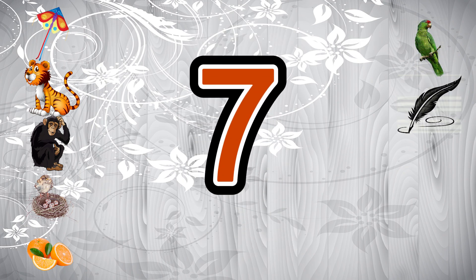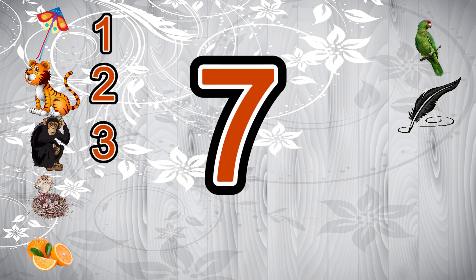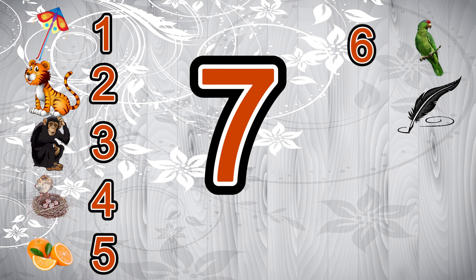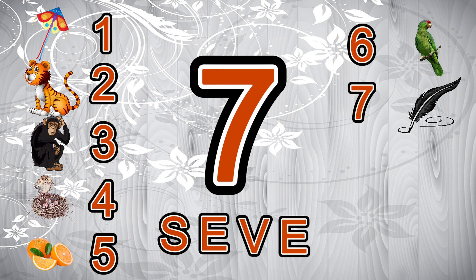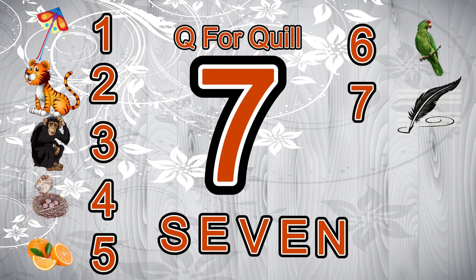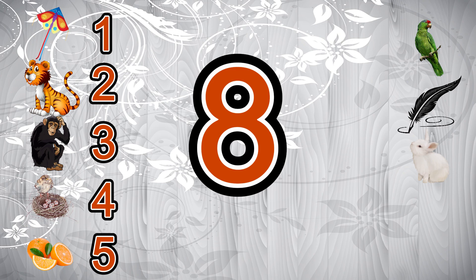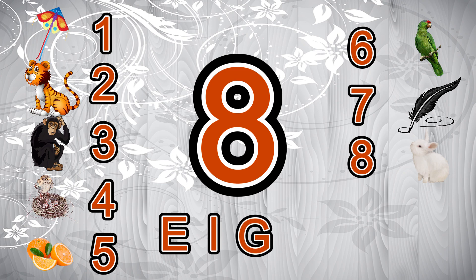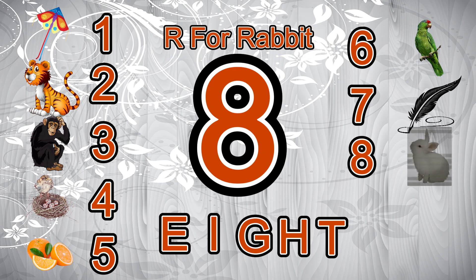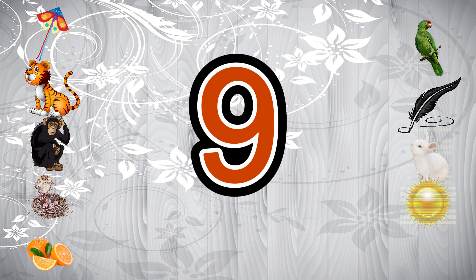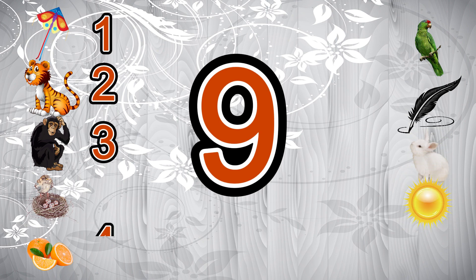7 - 1, 2, 3, 4, 5, 6, 7 - S, E, V, E, N - 7. Q for quill. 8 - 1, 2, 3, 4, 5, 6, 7, 8 - E, I, G, H, T - 8. R for rabbit.